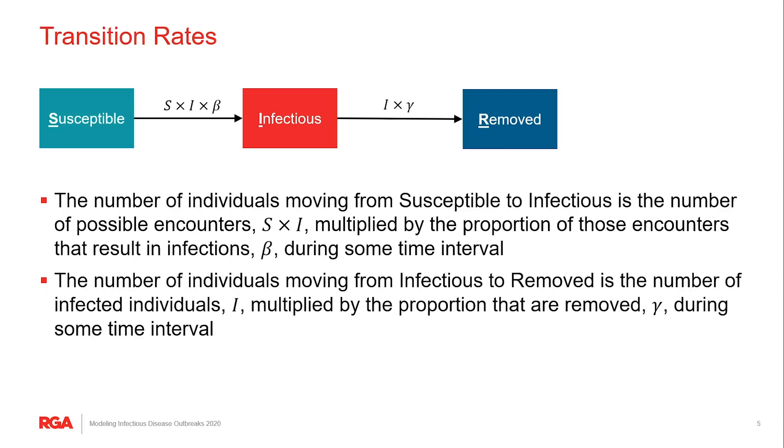So over any given time interval a certain percentage of individuals are going to move from one state to the next. And the rate at which individuals move from the susceptible state to the infectious state is equal to the number of all possible encounters which we calculate from S times I, the number of individuals that are susceptible times the number of individuals that are infectious, and then multiply that by the proportion of those encounters that are actually going to result in an infection.